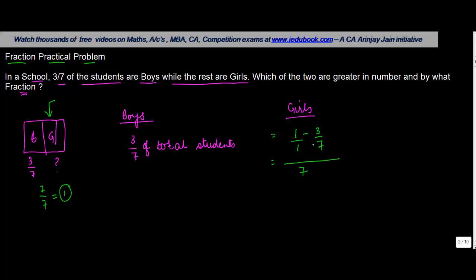Now if you take the LCM of 7 and 1, you will get 7. 7 goes into 1 seven times, 7 times 1 is 7 minus 3 equals 4/7. So the girls in the school are 4/7.